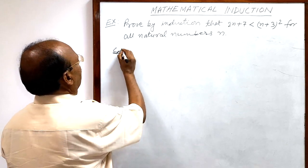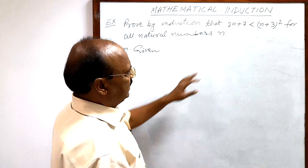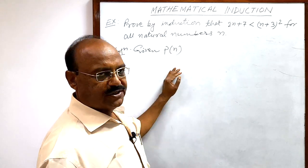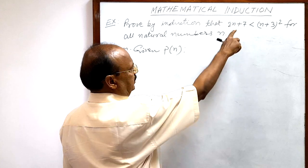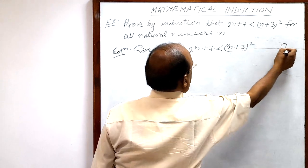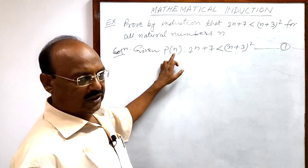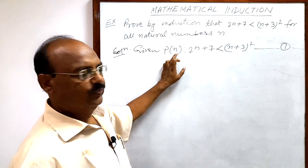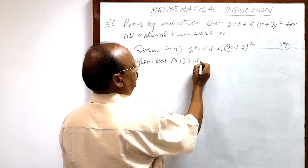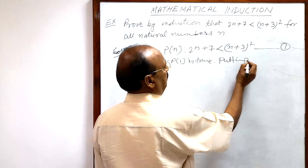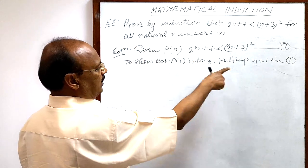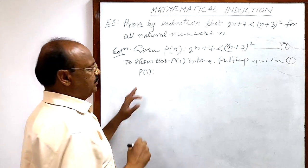The given mathematical statement is denoted by P(n), where P(n) denotes mathematical induction. The statement is: 2n + 7 is smaller than (n+3)². Let us call this relation number 1. Now we will put n=1 to show that P(1) is true. For this, we put n=1 in relation number 1.